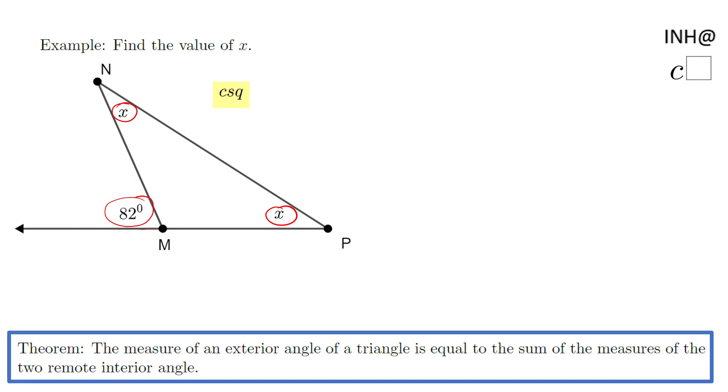We have a theorem down here which says the measure of an exterior angle is equal to the sum of the measure of the two remote interior angles. So which ones are the remote interior angles for this 82-degree angle? These two angles are the two remote interior angles.